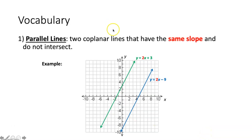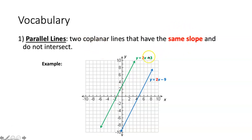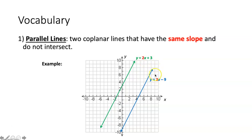First, we're going to talk about parallel lines. Those are two coplanar lines that have the same slope and do not intersect. Coplanar just means they lie on the same plane. Here you can see we have two lines both on the coordinate plane, so they are coplanar. They have the same slope — in slope-intercept form y = mx + b, where m is the slope — and each of these has a slope of two, therefore they are parallel lines.